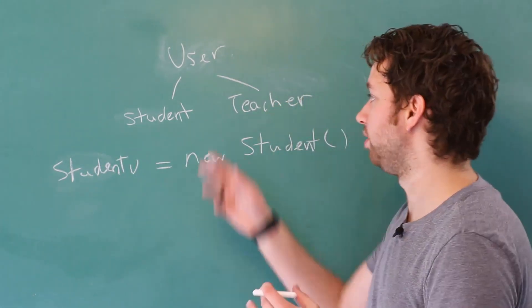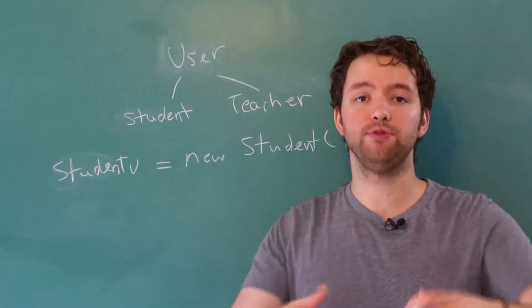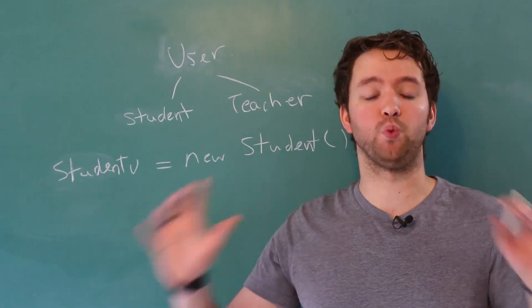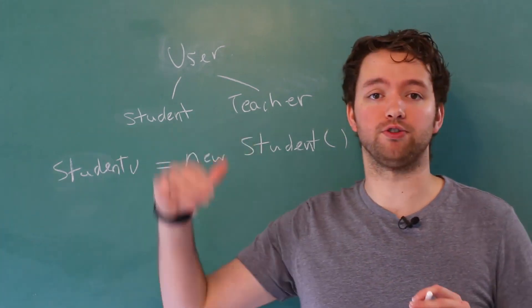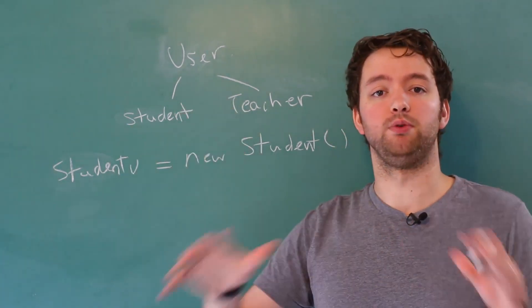You could also make a list of users and put both students and teachers in there. And the cool thing here is you can go through that list and you can tell the students and the teachers to do something such as work, and they're going to do the appropriate thing. The teachers are going to go do research or hide in their office. Students might go study or go to parties, whatever students do.